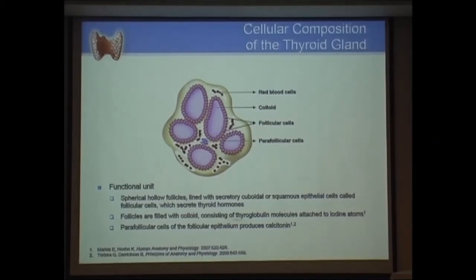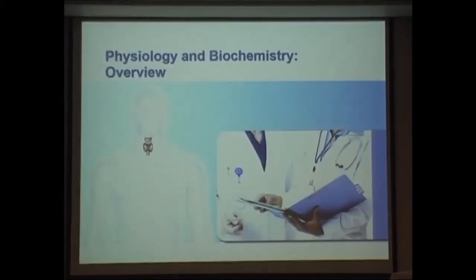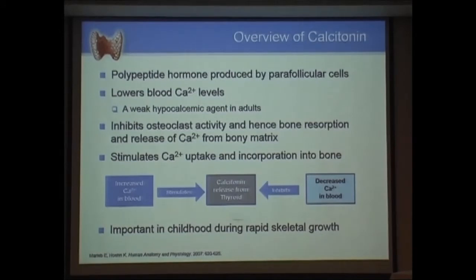Today I'm going to restrict myself to the follicular cells which secrete thyroxine. These are the follicles, as you can see, lined by follicular cells, and all the tissue inside is the colloid or thyroglobulin, which stores the thyroid hormone inside the thyroid cell. Calcitonin becomes important only in medullary cancer of the thyroid, which is a separate topic we won't cover today.